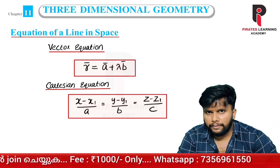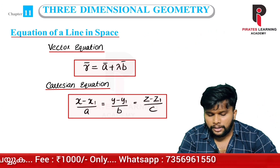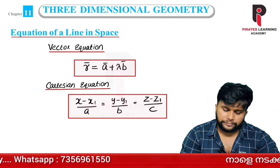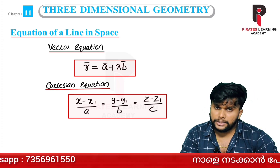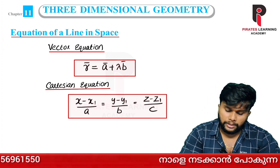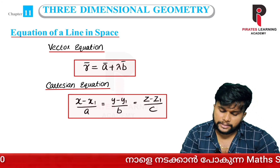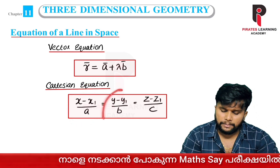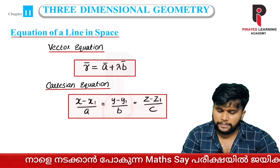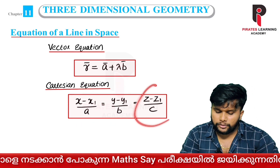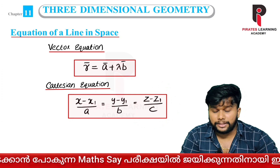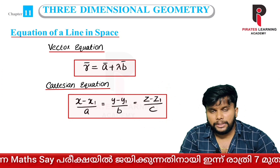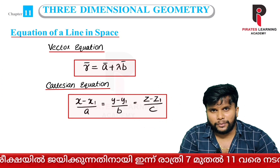That's the vector equation. Now the Cartesian equation: x minus x1 by a, equal to y minus y1 by b, equal to z minus z1 by c. If you learn these two, we will cover 3D geometry.